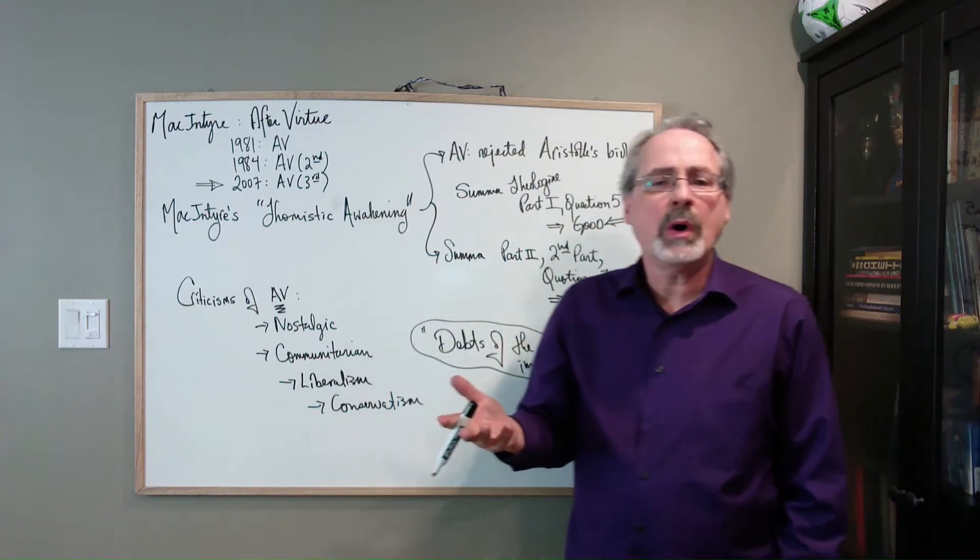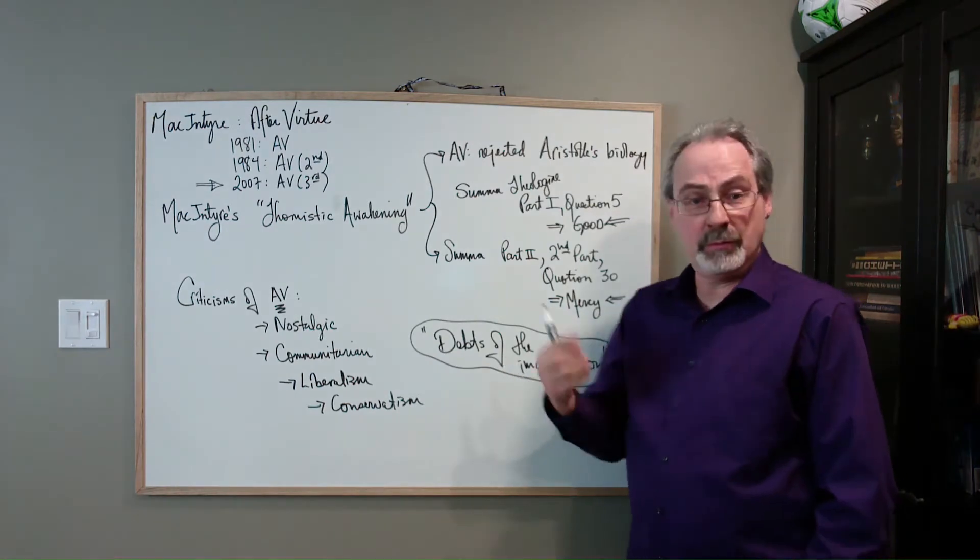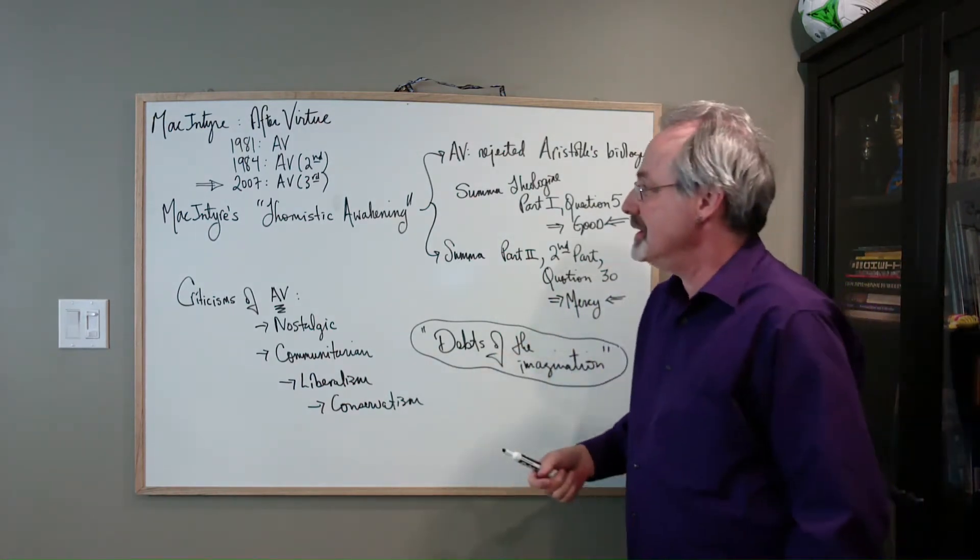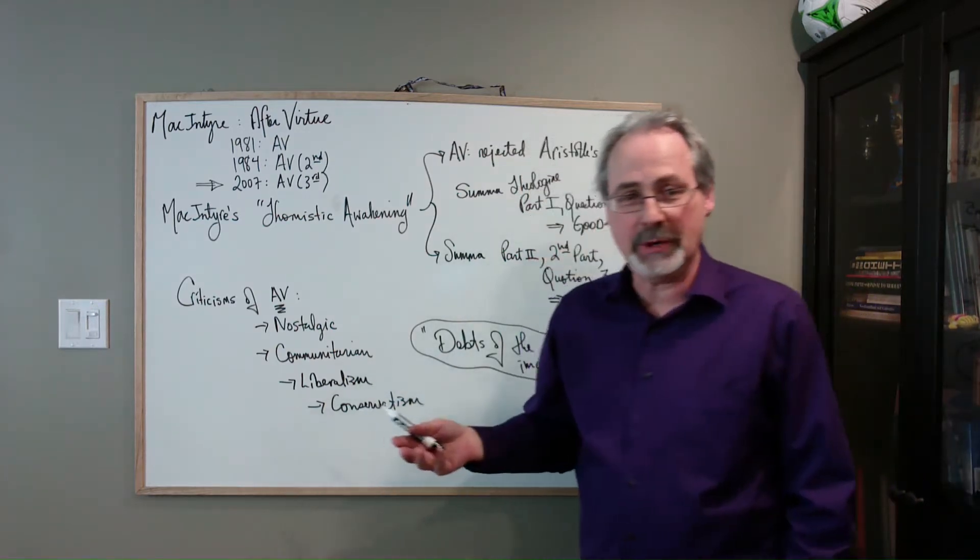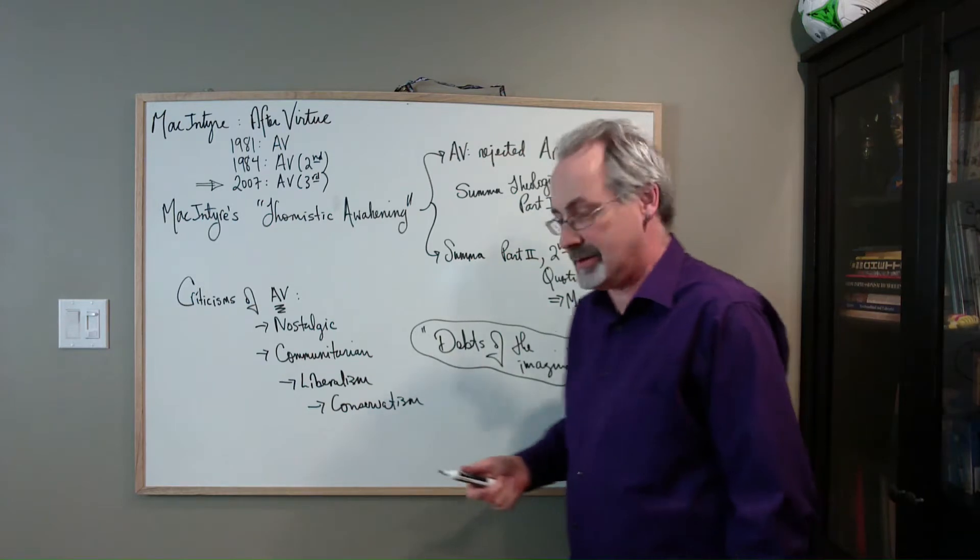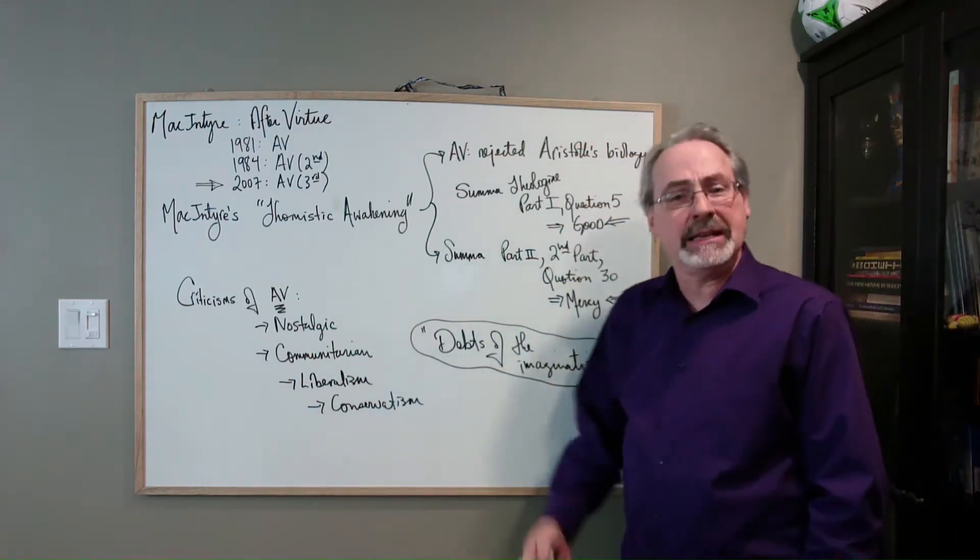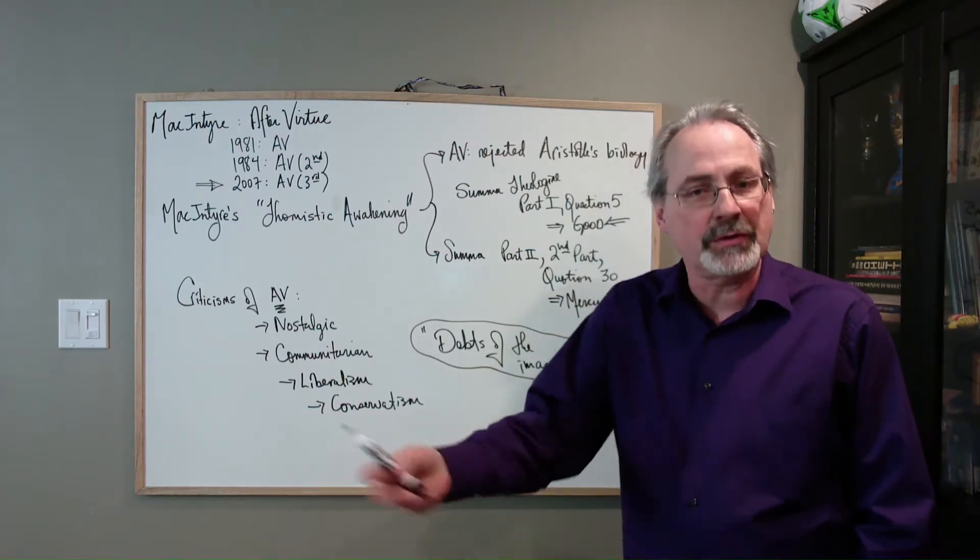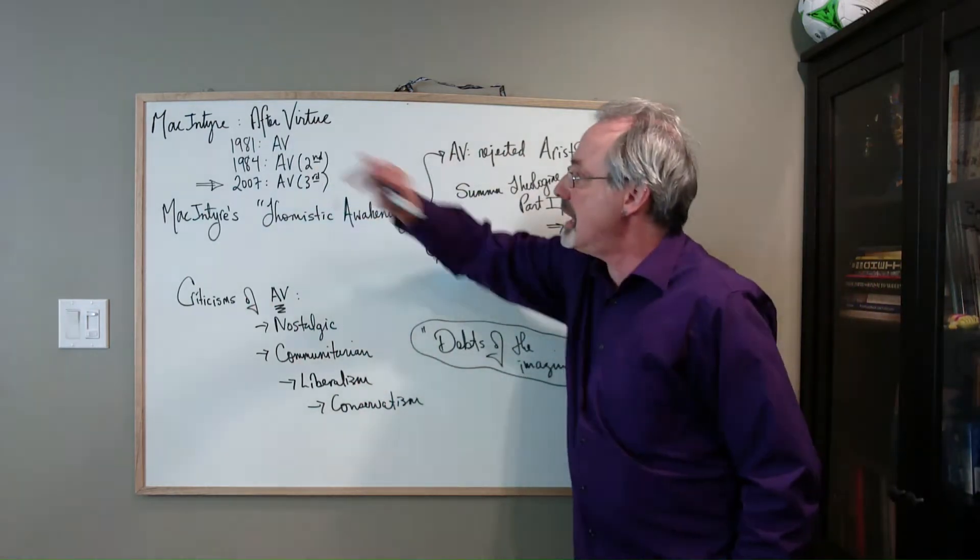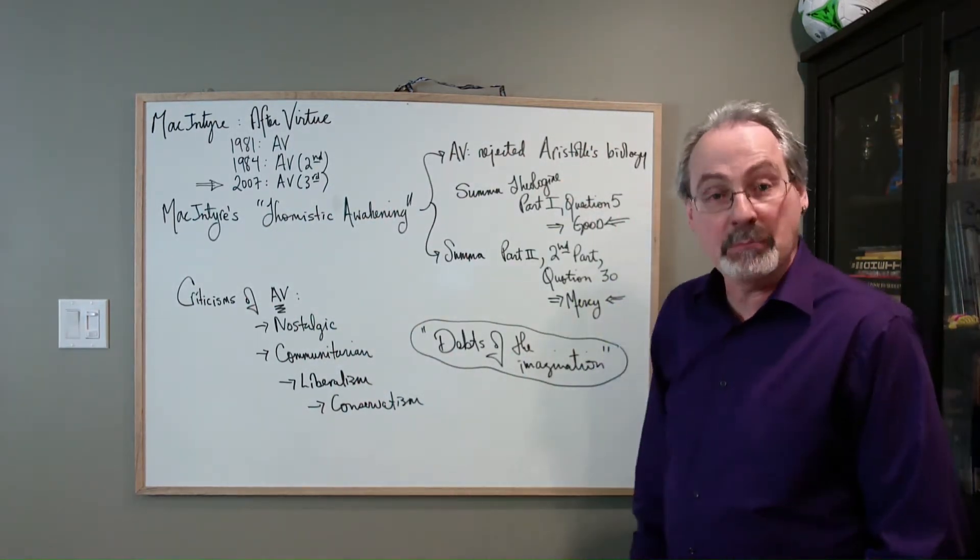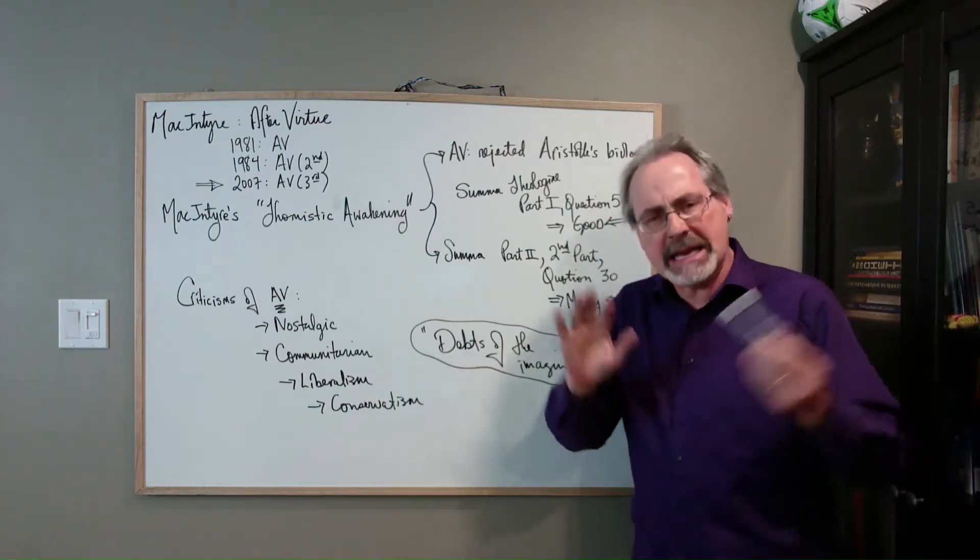Picking up on Alasdair MacIntyre's newfound appreciation of St. Thomas, I call it his Thomistic Awakening. As Kant credited Hume with waking him from his dogmatic slumbers, MacIntyre says he learned something about Aristotle through his reading of Aquinas.